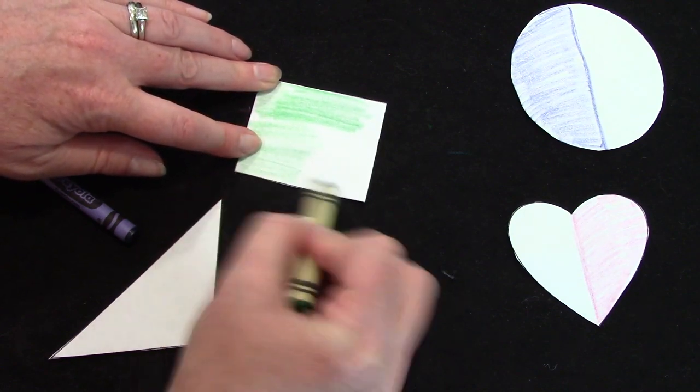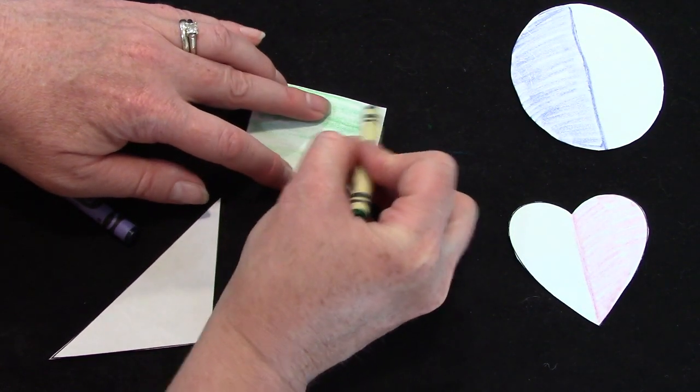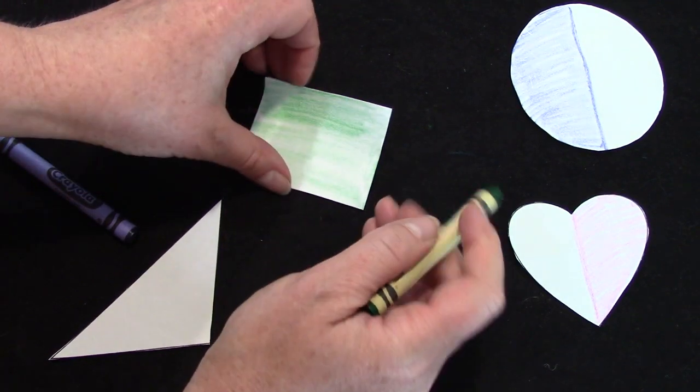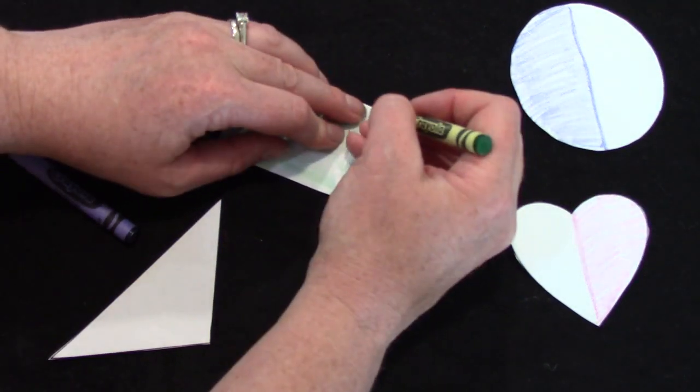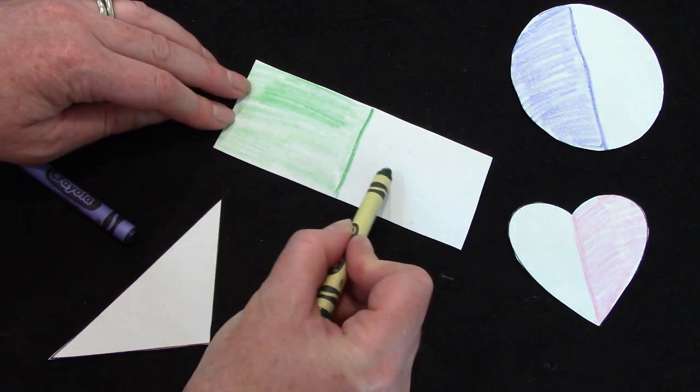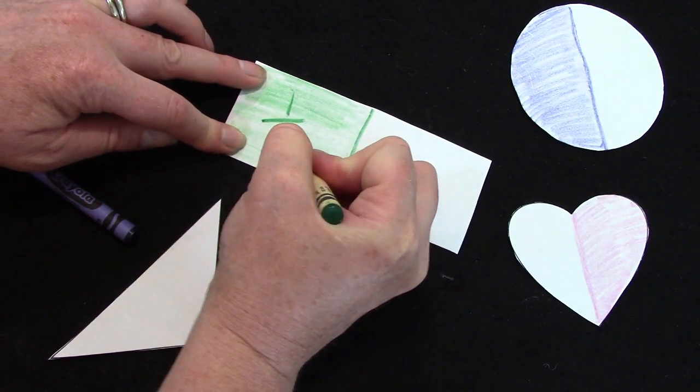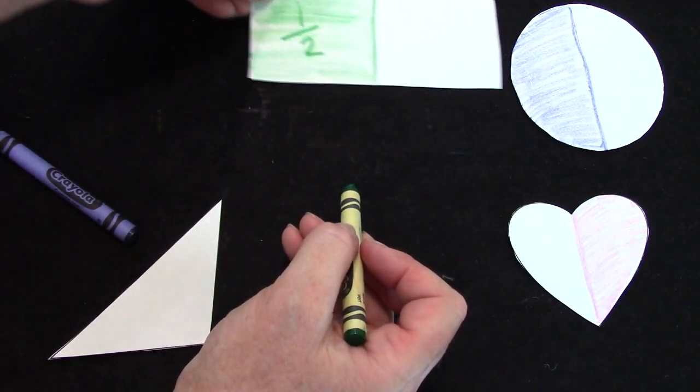You are going to practice folding the shapes in half and coloring one half of the shape. I have colored one out of the two pieces. One out of the two pieces. One half.